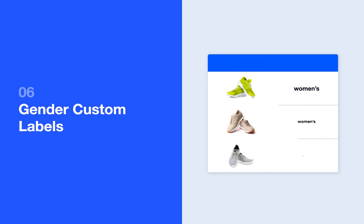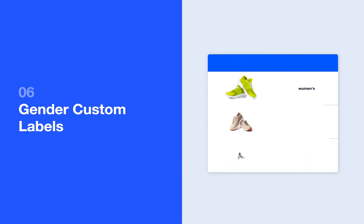You may want to use custom labels to separate products by gender. For example, your brand may sell products that are mostly purchased by women, but you may have some items for men within the same product type. If the products for men typically don't perform well, you could use your gender custom labels to exclude those products from the campaign.